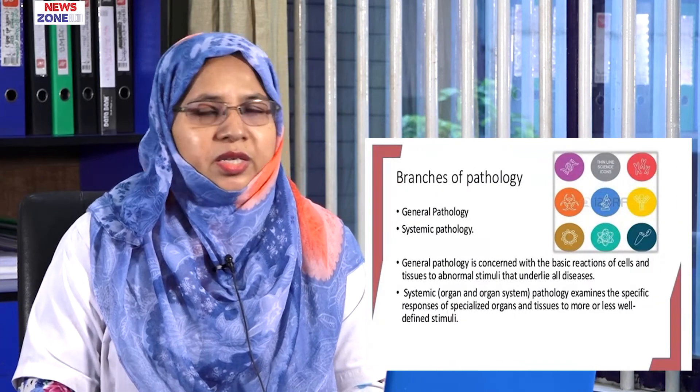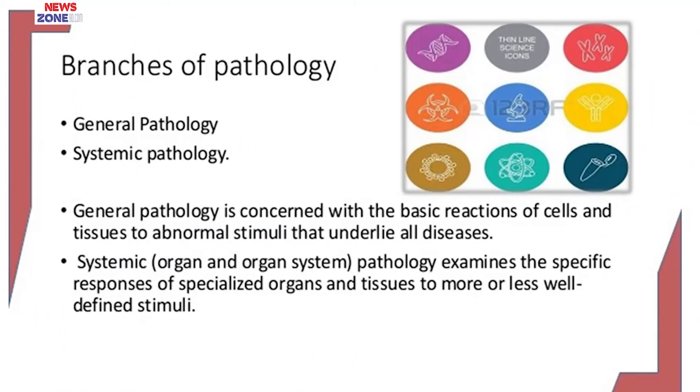There are some branches and subdivisions of pathology. The two main branches are general pathology and systemic pathology. General pathology deals with the basic reactions of cells and tissues to abnormal stimuli that underlie disease — it explains the basic mechanism of all disease processes. Systemic pathology examines the specific responses of specialized organs and tissues to more or less well-defined stimuli. For example, when coronary arterial blood flow is reduced due to atherosclerotic narrowing, myocardial cells undergo necrotic death — that is called myocardial infarction. Systemic pathology provides information about the mechanism of disease process across all body systems.